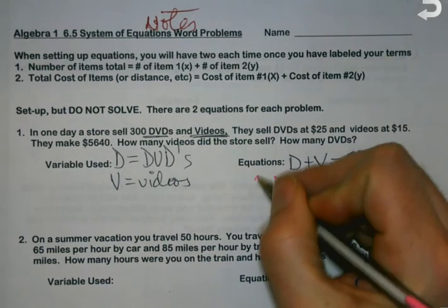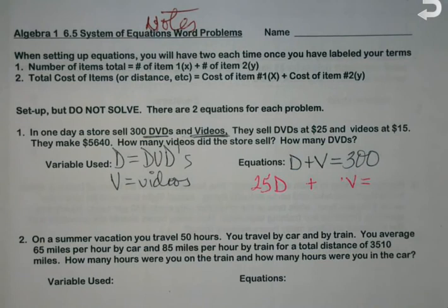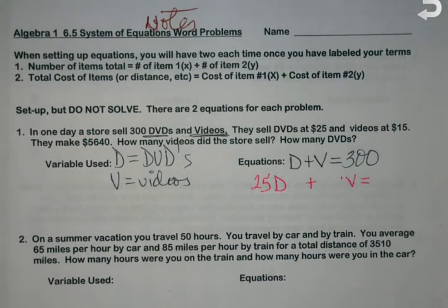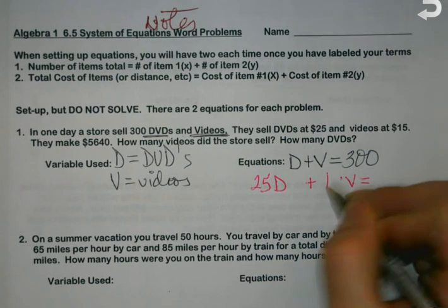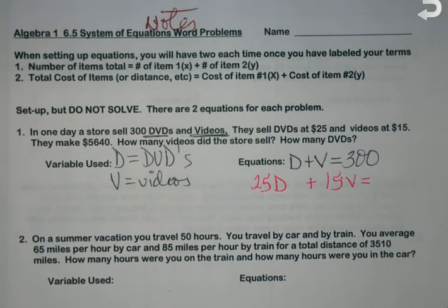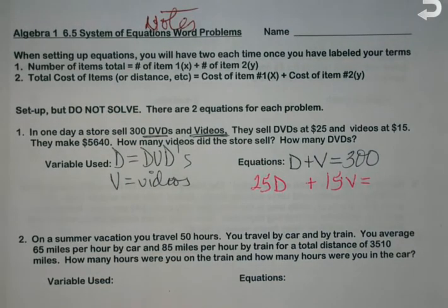The second equation is going to be the costs that go with each one. So I'm still going to have a D, I'm still going to have a V. How much does a single DVD cost? 25. High price stuff. So I put the price in front of how many I'm selling.